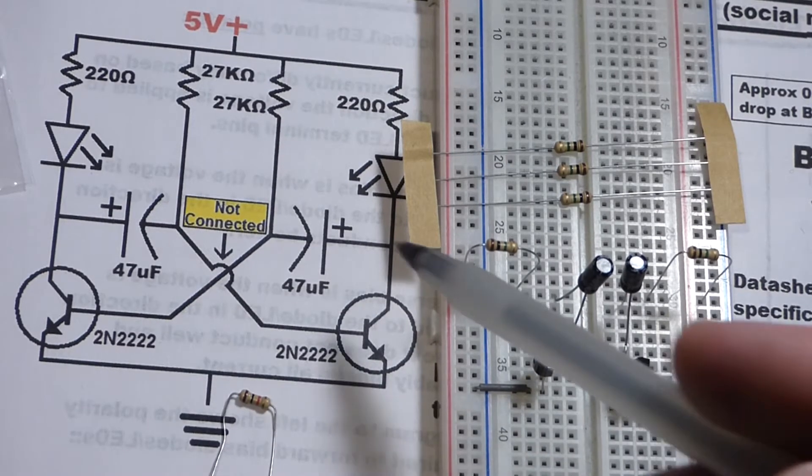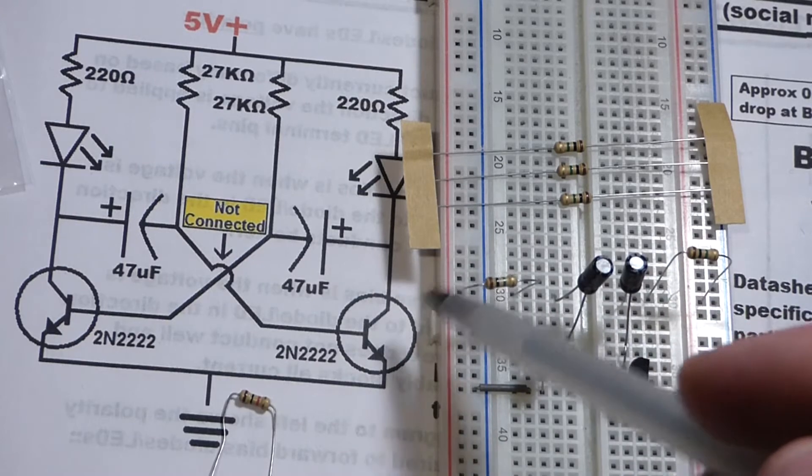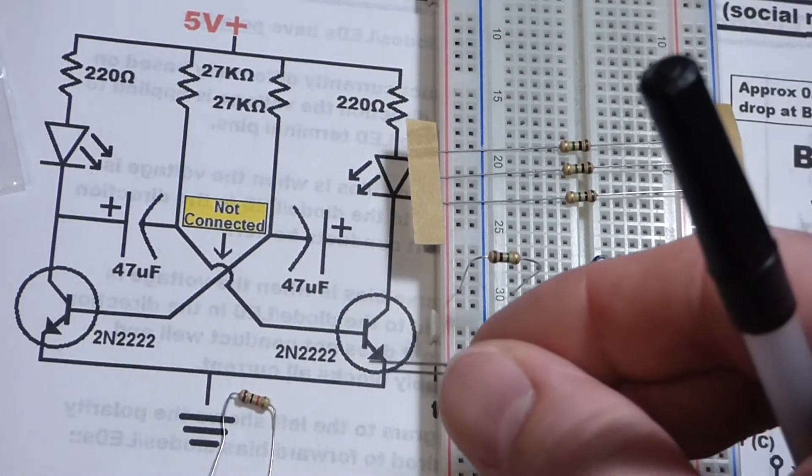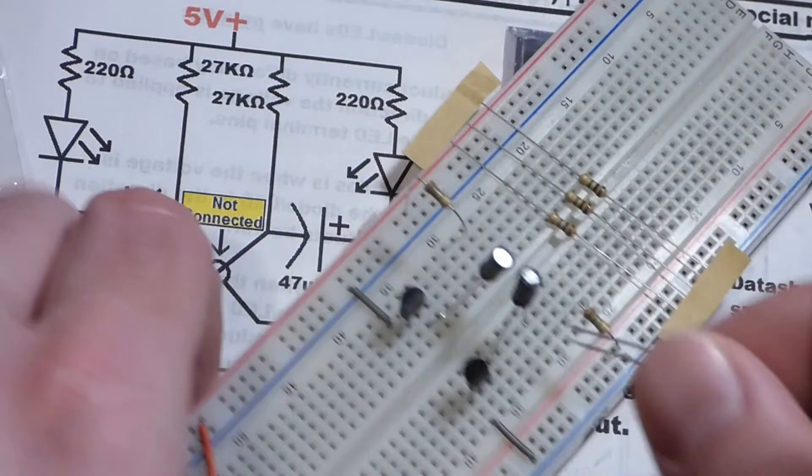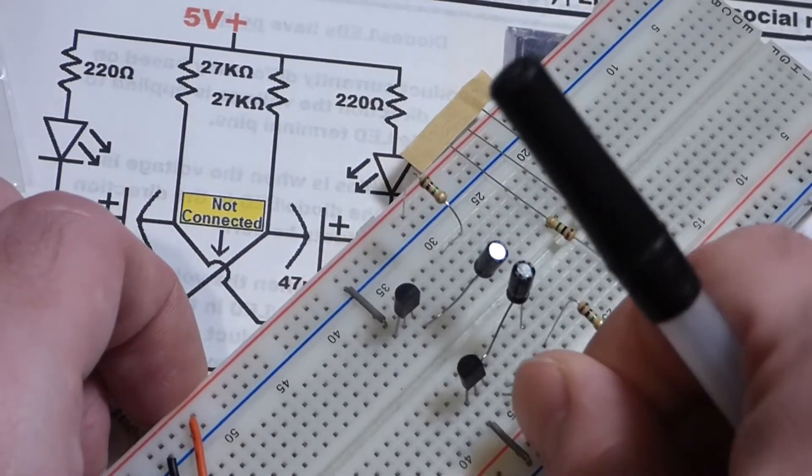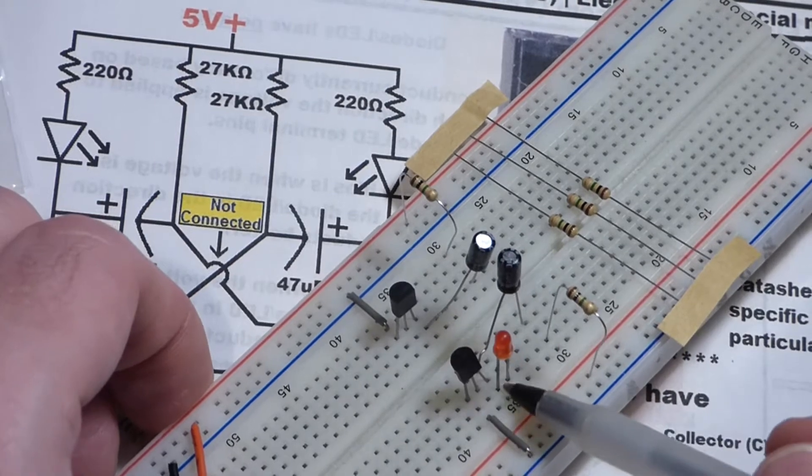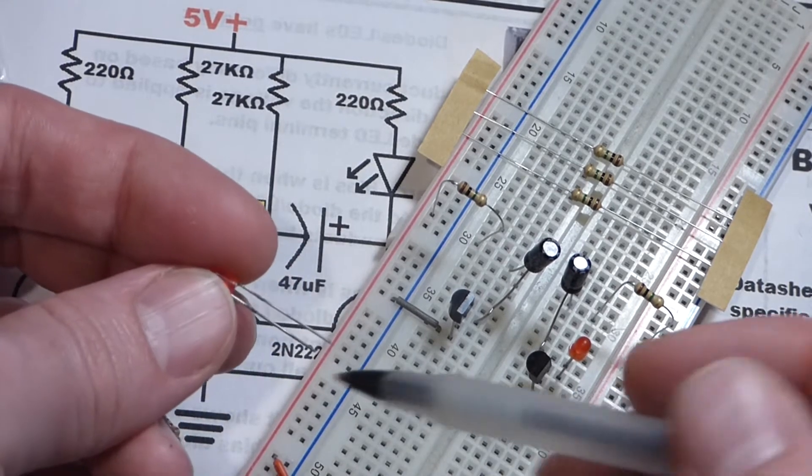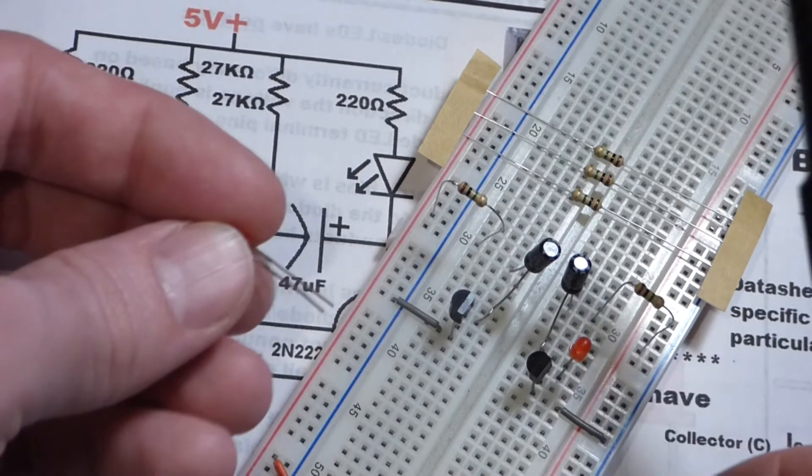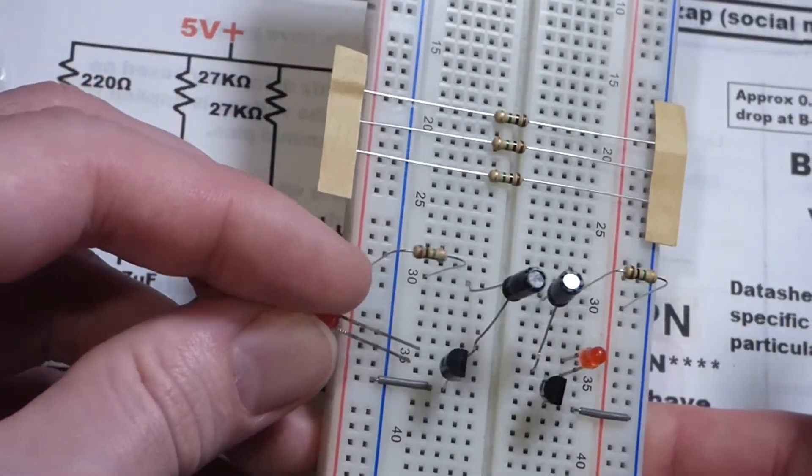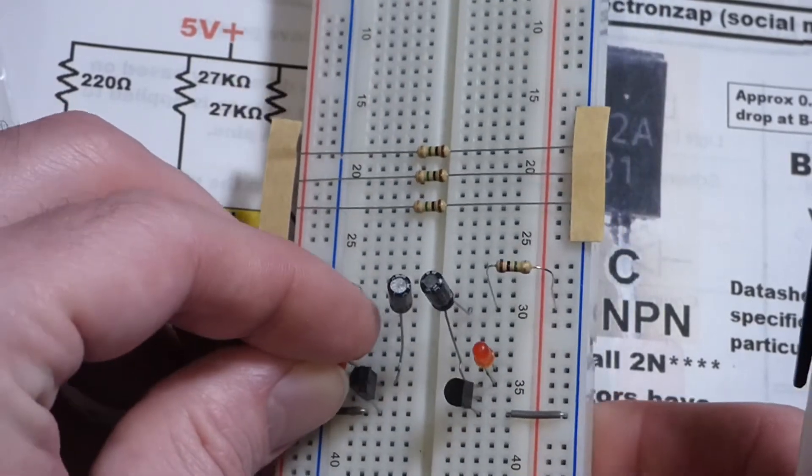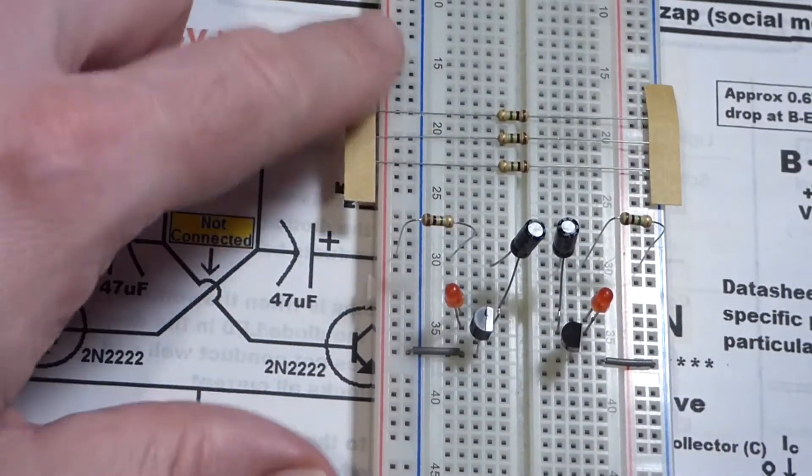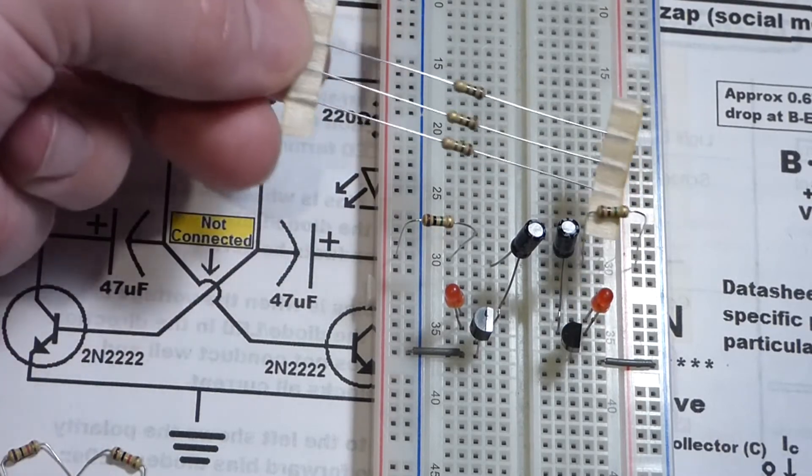Now we're going to grab the LEDs. The cathode, the shorter lead of the LEDs, we're going to connect to the collector right there, and then the longer lead will be one row up from there. We'll do the same thing on the other side. Find the shorter lead. There's also a flat edge on the shorter lead side but it's usually easier just to look for the shorter lead.